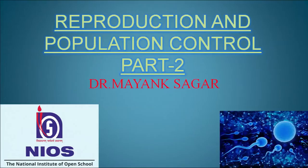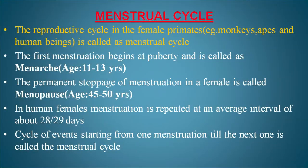Dear learner, welcome to the NIOS senior secondary biology course. I am Dr. Mayang Sagar and we will continue the topic of reproduction and population control. The menstrual cycle is the reproductive cycle in female primates — for example, monkeys, apes, and human beings.